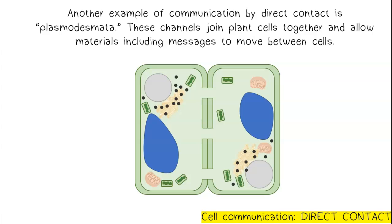Another example of communication by direct contact is plasmodesmata. These channels join plant cells together and allow materials, including messages, to move between cells.